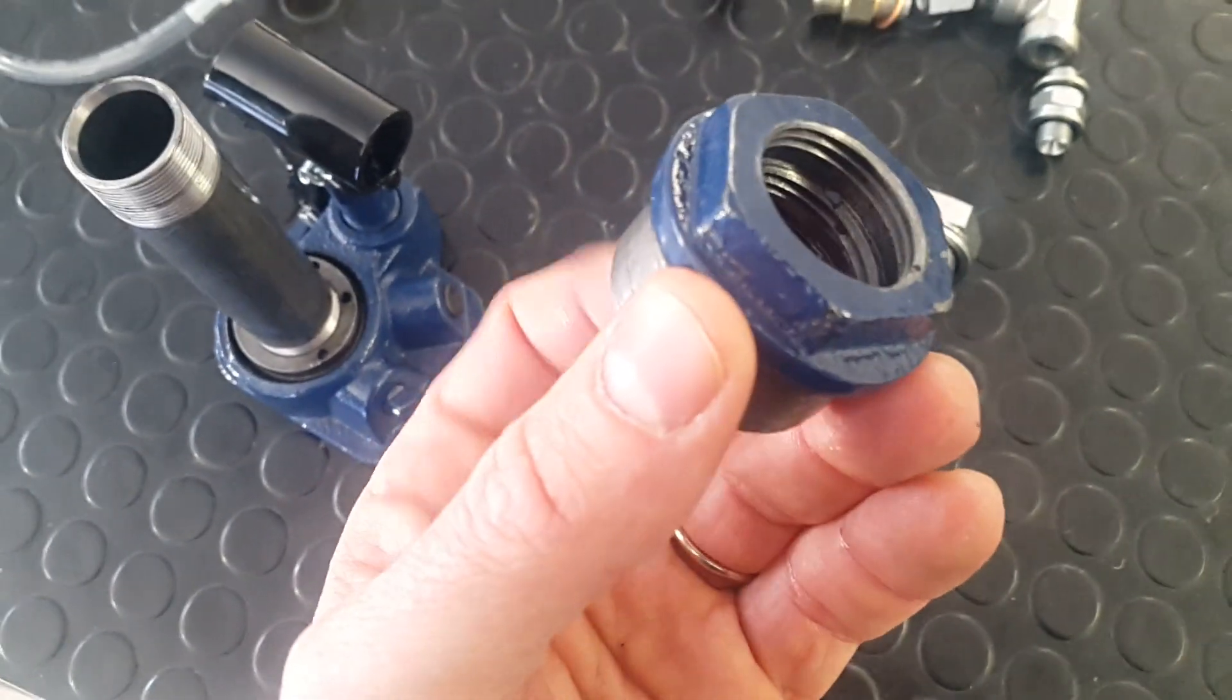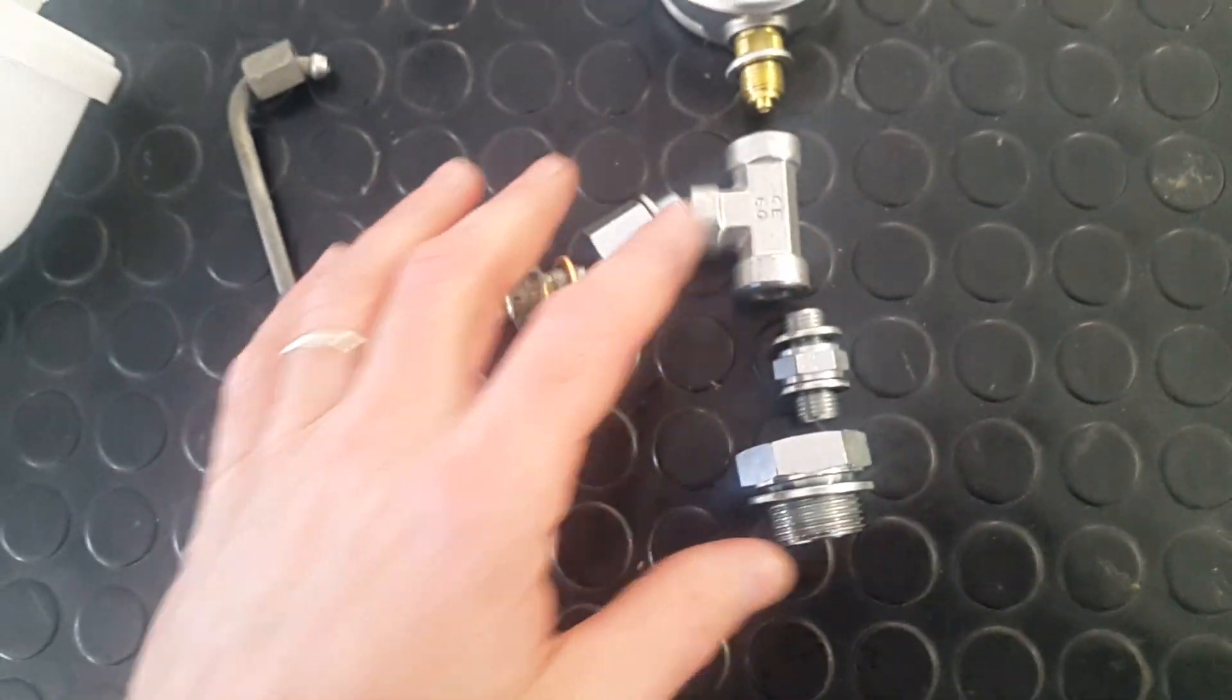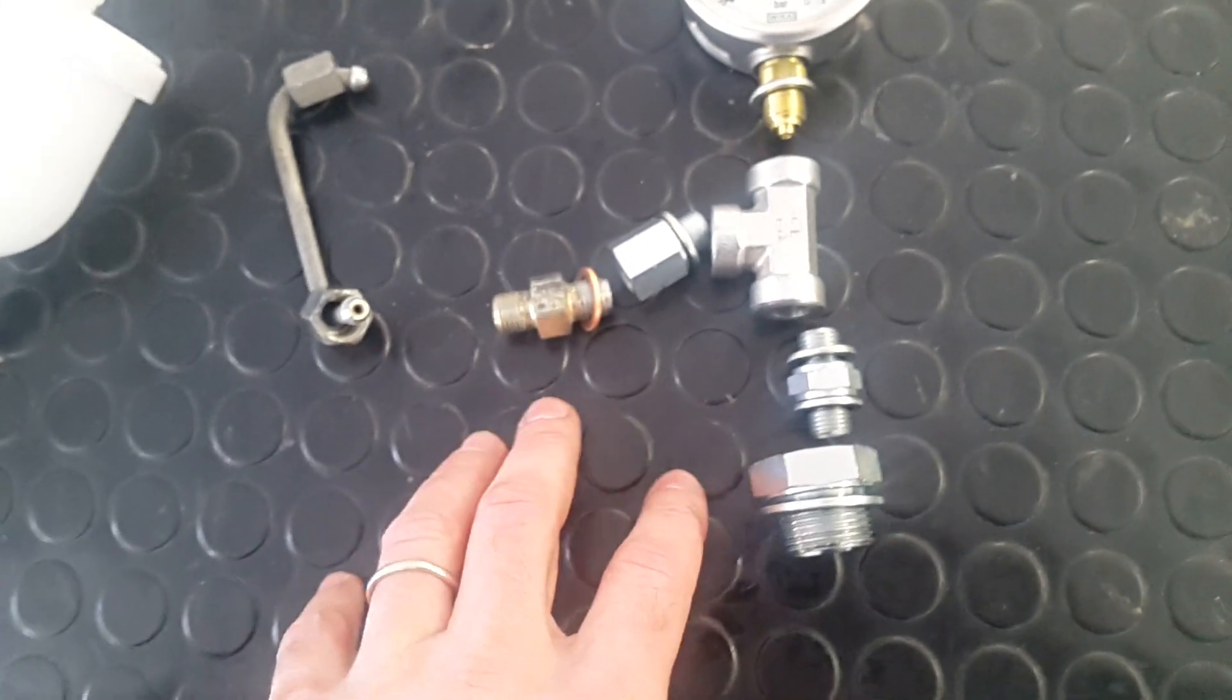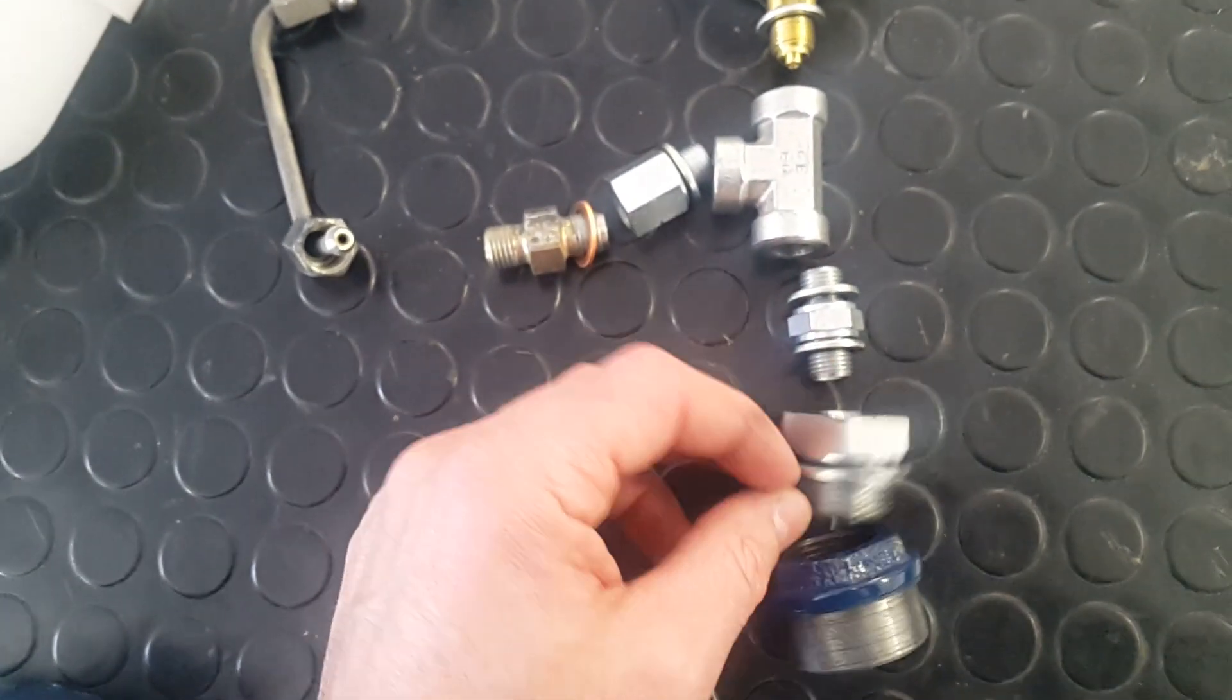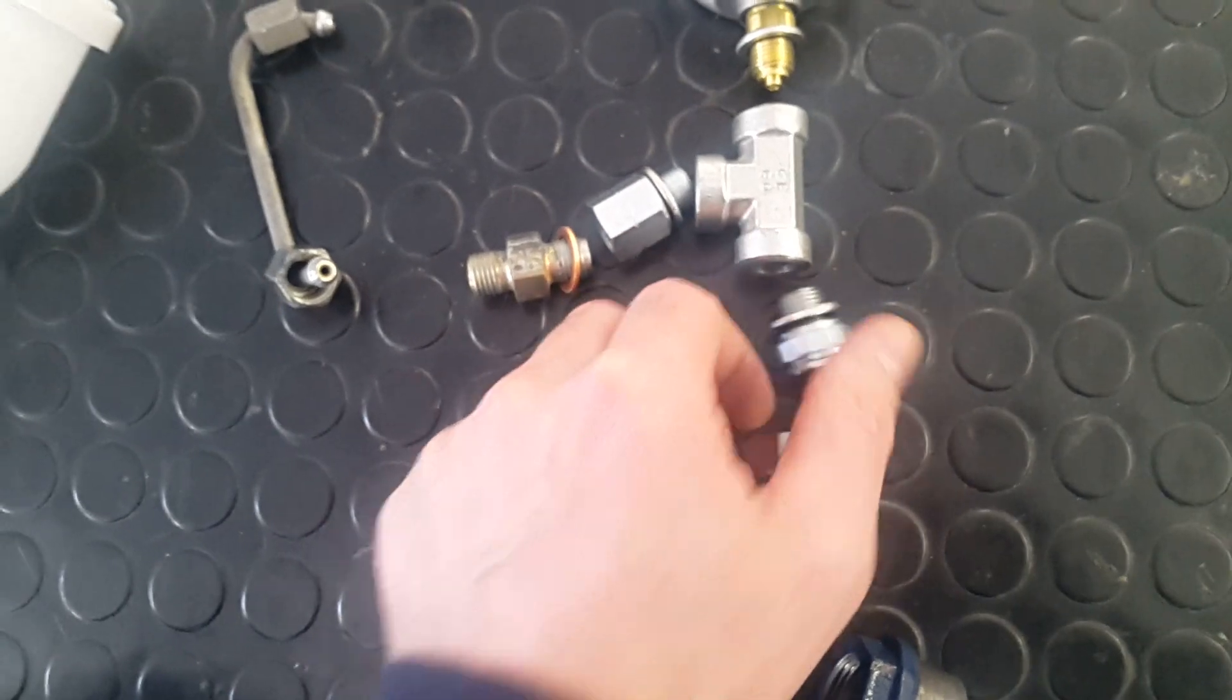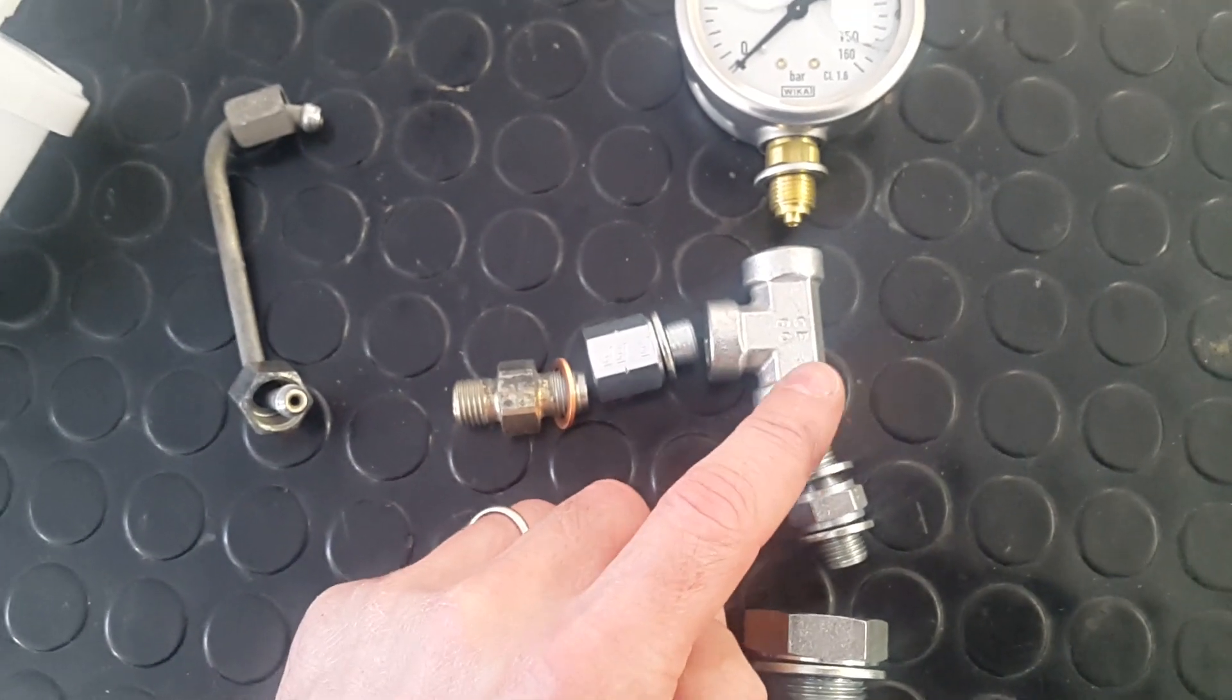I move to some attachments. Here is a high-pressure attachment that works up to 300 bar. This is a conversion from three-quarter to one-quarter. Then I move to a T female one-quarter.